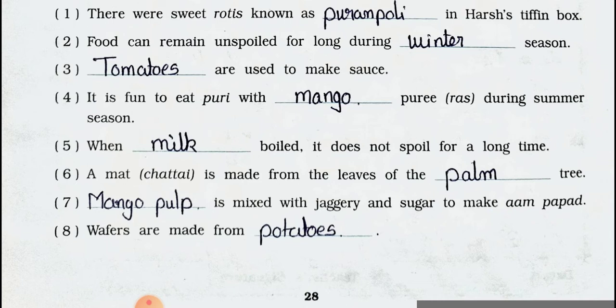Number 6: A mat (chatai) is made from leaves of the blank tree — answer: Palm tree. Number 7: Blanks is mixed with jaggery and sugar to make aam papad — answer: Mango pulp. Number 8: Wafers are made from blanks — answer: Potatoes.